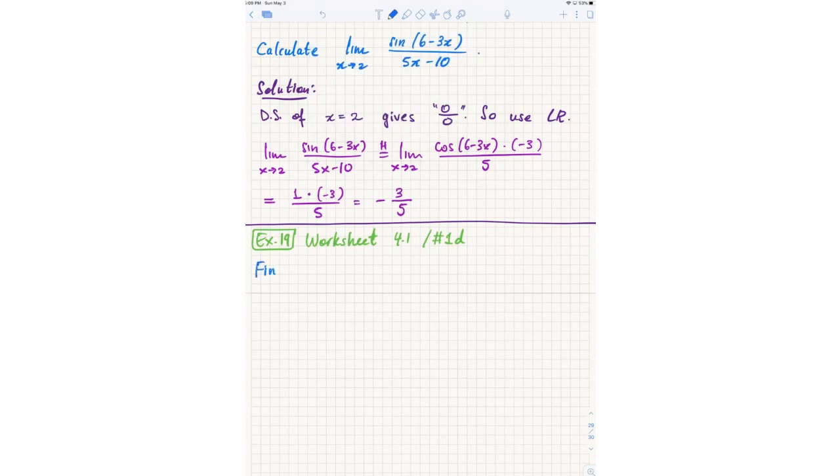Okay, so worksheet 4.1 number 1D. Find the absolute extrema of e to the negative x sine x on the interval 0 to pi.